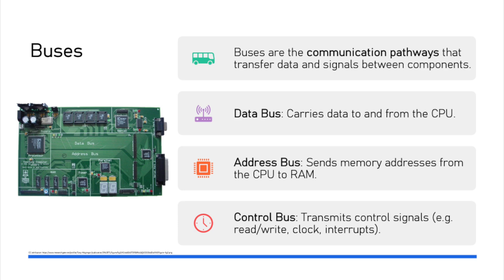The control bus is used to transmit command and control signals from the CPU to all other components and vice versa. Interrupts come back to the CPU and control signals are transmitted from the CPU, so this bus is also bi-directional. Some of the signals transmitted by the control bus include read and write operations, interrupt requests, clock signals for synchronization, and status signals from various hardware components.